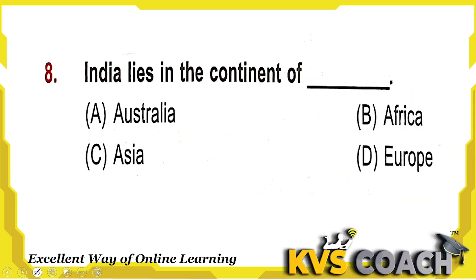Next: India lies in which continent? In the world there are seven continents — Australia, Asia, Africa, Europe, North America, South America, and Antarctica. India is in the Asia continent. Option C is the right answer.